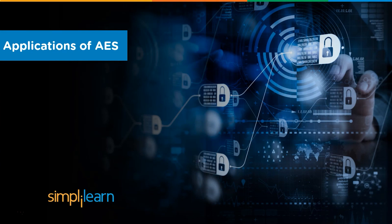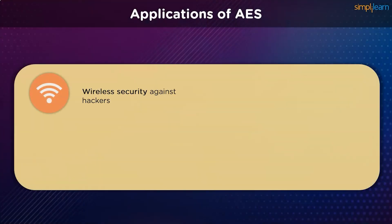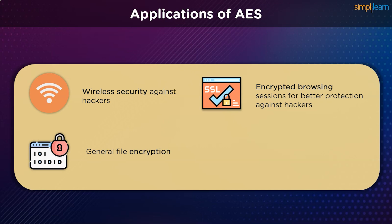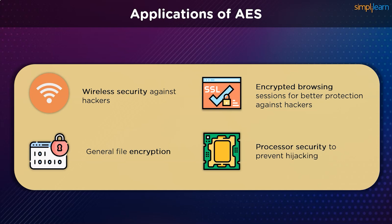AES finds most use in wireless security. To establish secure authentication between routers and clients, highly secure mechanisms like WPA and WPA2-PSK are extensively used in securing Wi-Fi endpoints with the help of Rijndael's algorithm. AES also helps in SSL/TLS encryption, which is instrumental in encrypting internet browser sessions. AES works in tandem with asymmetric encryption algorithms to ensure encrypted communication channels. It is also prevalent in general file encryption of various formats, and is used for processor security in hardware appliances to prevent machine hijacking.